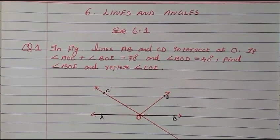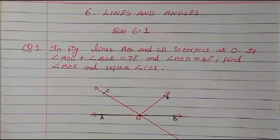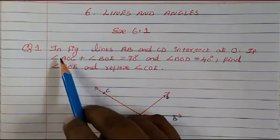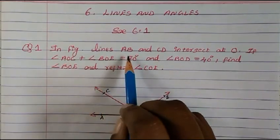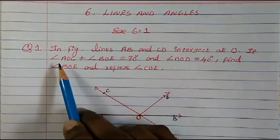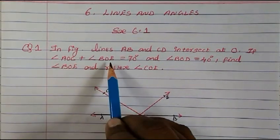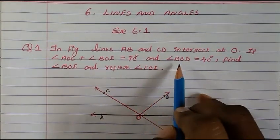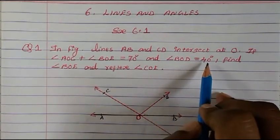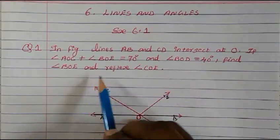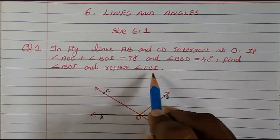Hi everyone, welcome to Mash Math. Today we are going to study from Chapter 6, Lines and Angles, Exercise 6.1, Question 1. In the figure, lines AB and CD intersect at O. If angle AOC plus angle BOE is equal to 70 degrees and angle BOD is equal to 40 degrees, find angle BOE and reflex angle COE.